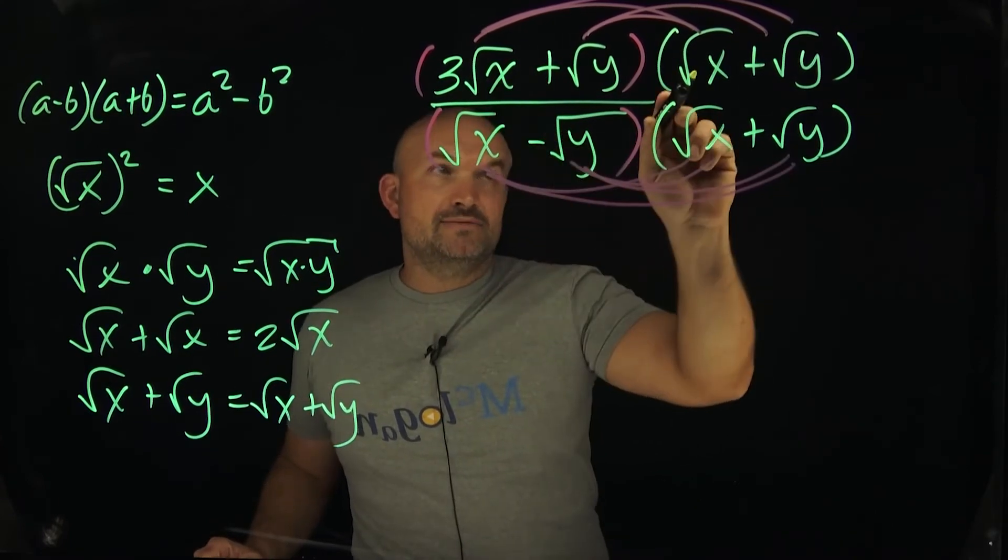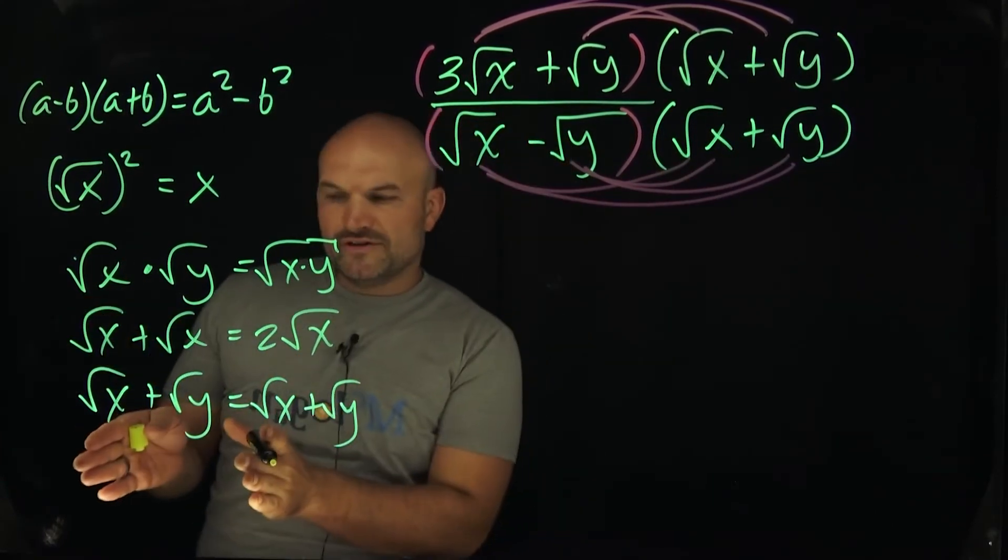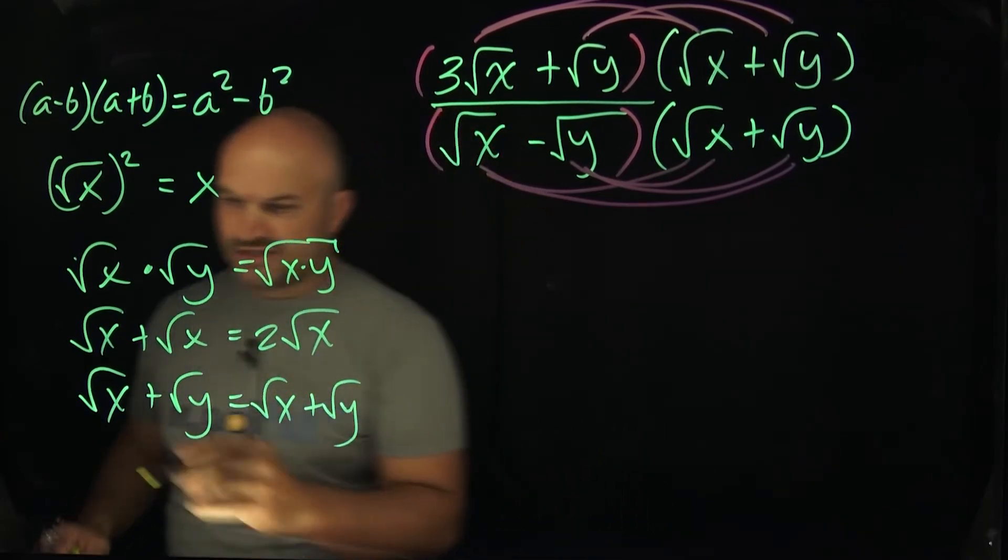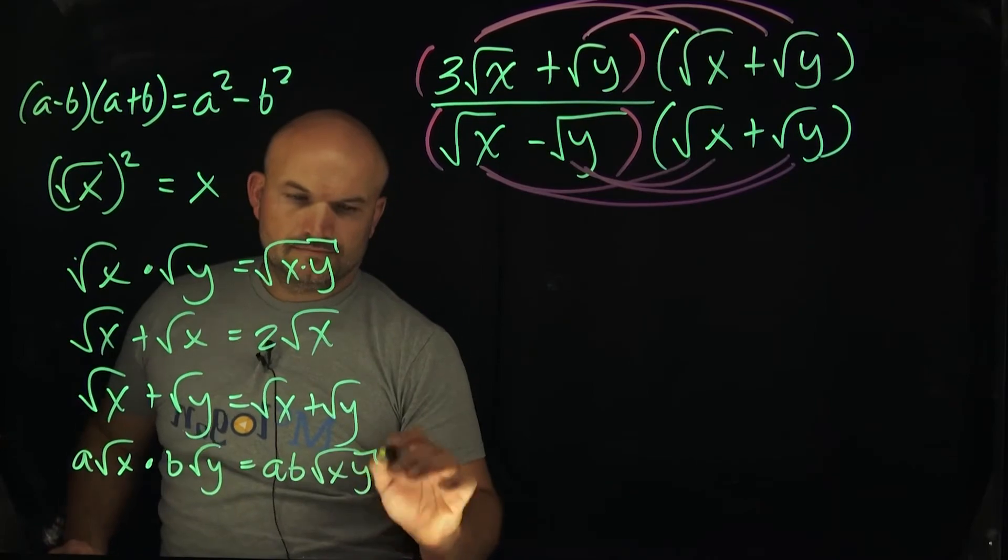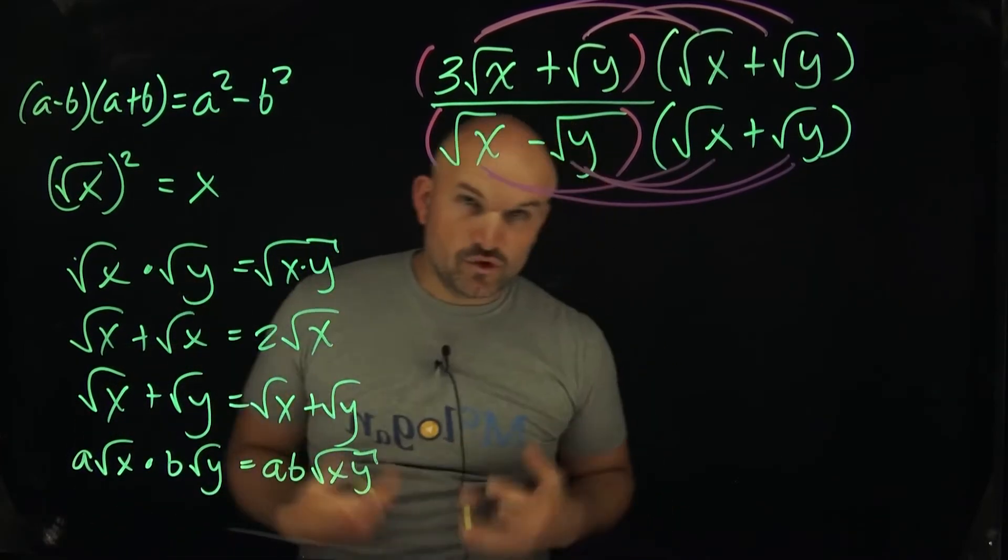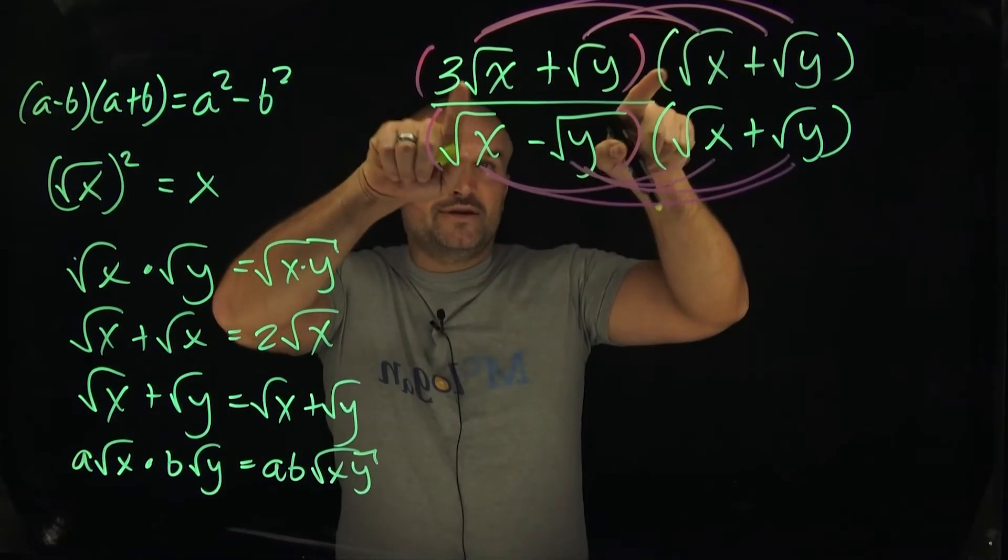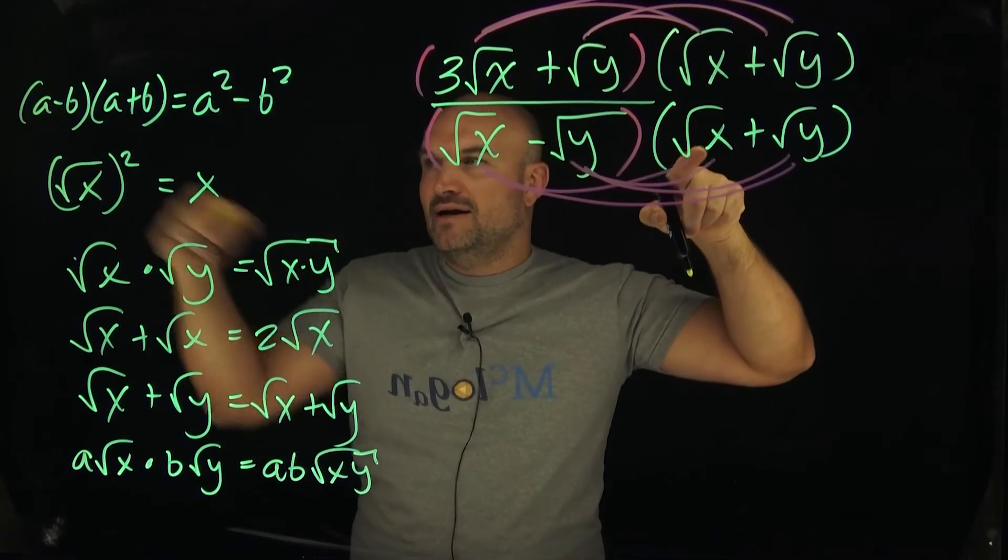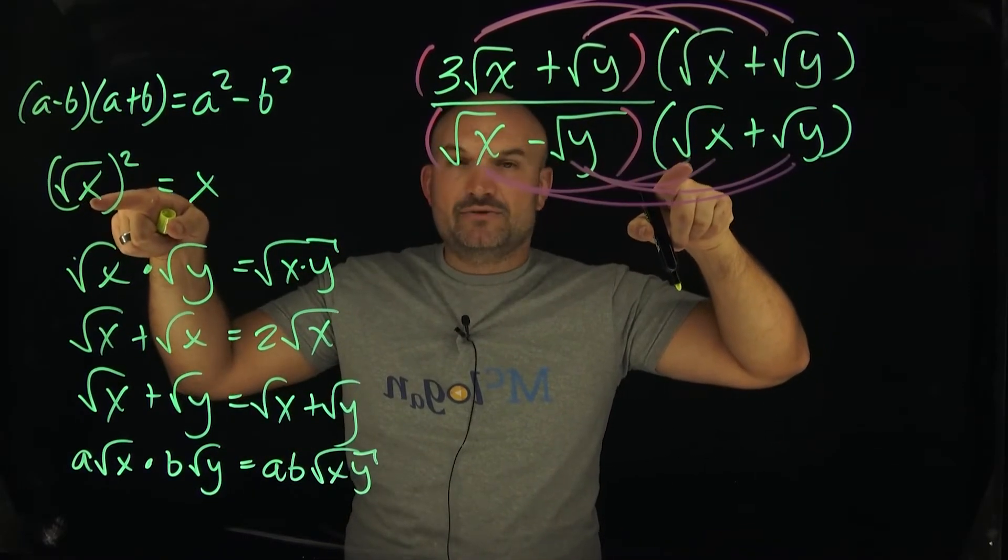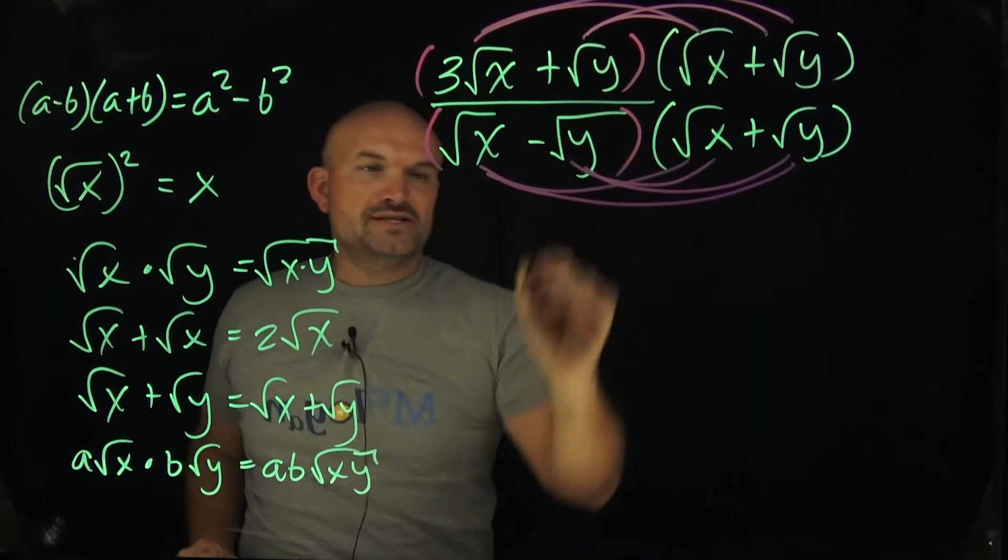Three square root of x times square root of x. Now, I didn't talk about when we have a number in front. When you do have coefficients in front, you're just going to multiply those coefficients. So in this case, it's really three times one times x. And this is x times x, which is going to be x squared. But what do we know about x squared? The square root of x squared is just going to be x. So therefore, this is just going to be 3x.